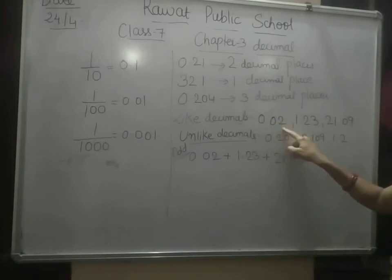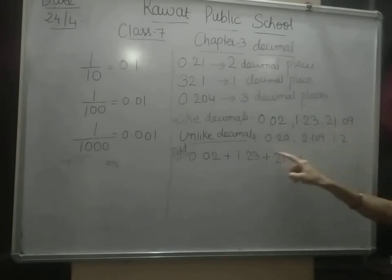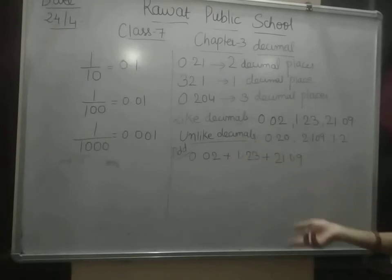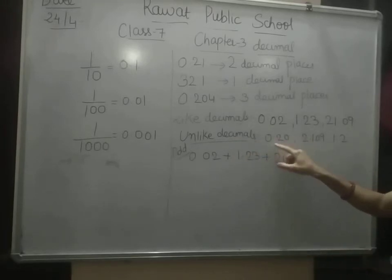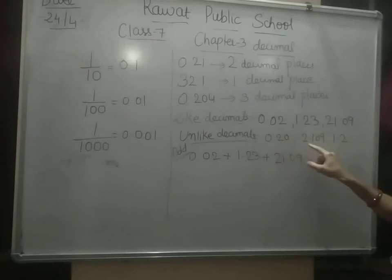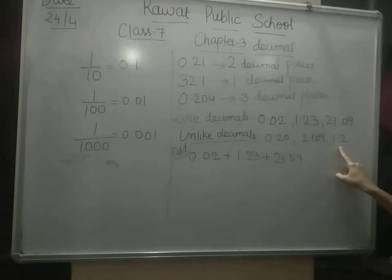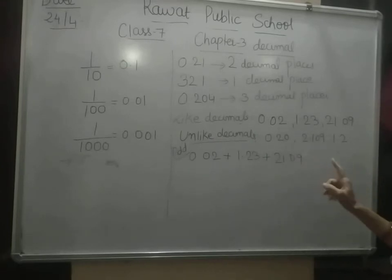So the decimal is before 2 numbers — here also, here also, and here also. So they are called like decimals because the decimal places are 2, which is common in all the terms. Now what are unlike decimals? Here I have taken examples: 0.20, 2.109, and 1.2. Here the decimal place is 2, here it is 3, and here it is 1. So they are unlike decimals because the decimal places are different in all the terms.